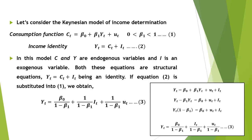To illustrate this, consider the Keynesian model of income determination. The consumption function is ct = β₀ + β₁yt + ut, and the income identity is yt = ct + it. In this model, consumption and income are the endogenous variables, and investment expenditure is treated as an exogenous variable. Both equations are structural equations. β₁ is the slope of the consumption function — that is, the MPC, the marginal propensity to consume — and is assumed to lie between 0 and 1.